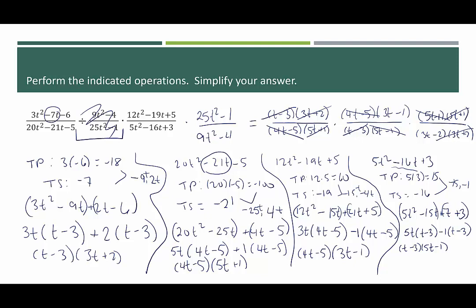In the numerator we have 3t minus 1. In the denominator we have 3t minus 2. And that's it — that is our final answer: 3t minus 1 over 3t minus 2. Thank you for bearing with me as we looked at this very long example. These have been examples of multiplying and dividing rational expressions. Thank you for stopping by.